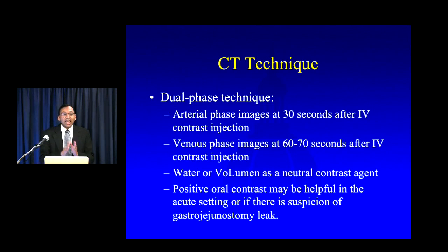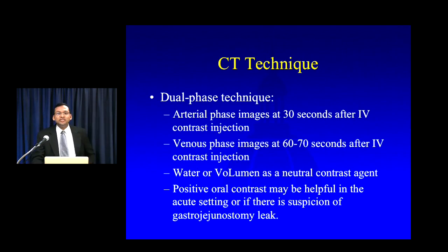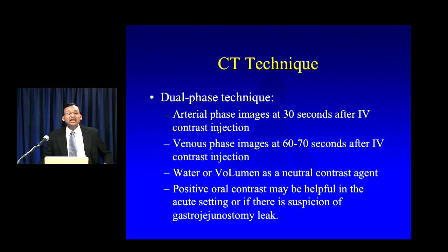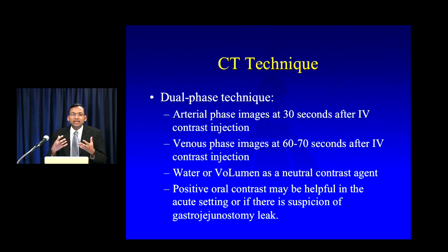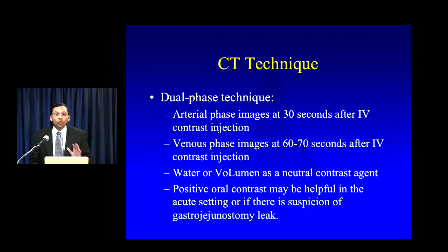I'm a strong believer that anyone who's had a prior Whipple procedure needs to be imaged with dual-phase technique — arterial phase imaging typically at about 30 to 35 seconds after IV contrast, and a venous phase at typically 60 to 70 seconds after IV contrast. I typically avoid giving positive oral contrast in this group of patients unless I'm concerned about a leak at the gastrojejunostomy. Contrast pooling in the stomach can result in beam hardening artifact or streak artifact that might prevent you from identifying a local recurrence. The only time I give positive oral contrast is in the acute setting where I'm worried about a leak, usually at the gastrojejunostomy.